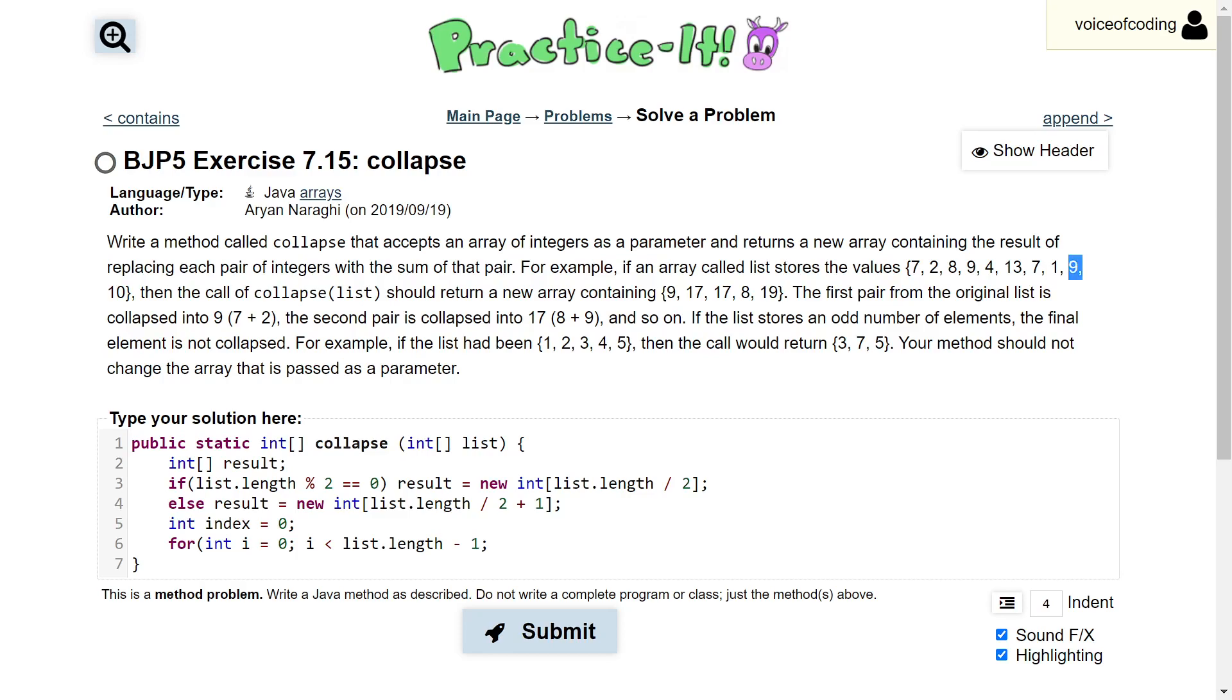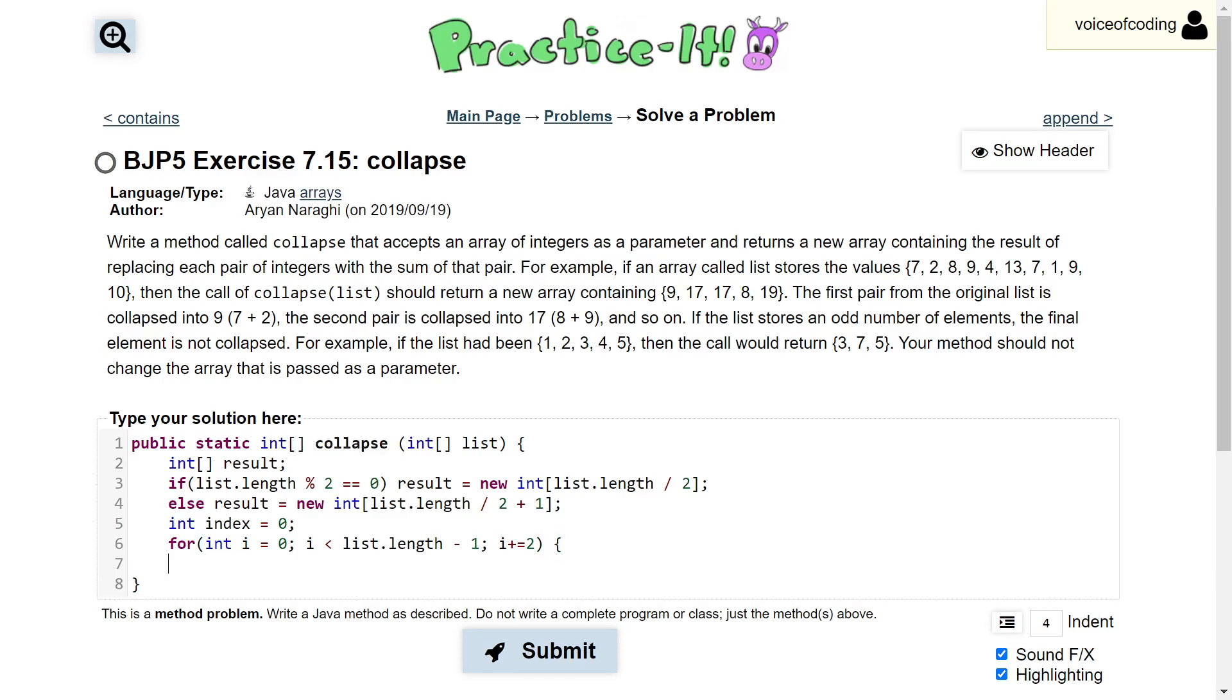That way, we give that number a chance to be able to collapse with a pair. We're also going to not increase our for loop by 1, but by 2.